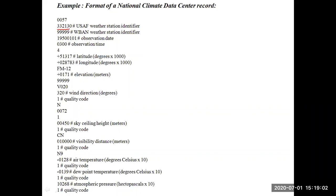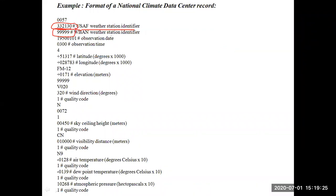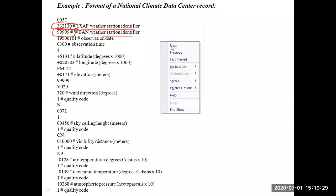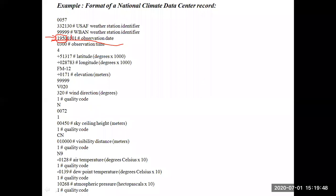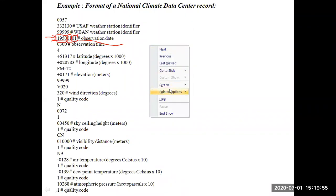One line of record will look like this. The first field is the weather station identifier — USAF, which stands for United States Air Force. This is the identifier field. The second field is also a weather station identifier. Then there is the observation date field, which indicates on which date the observation was made.